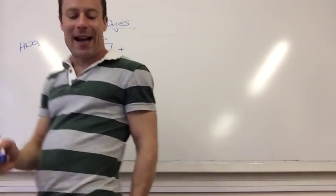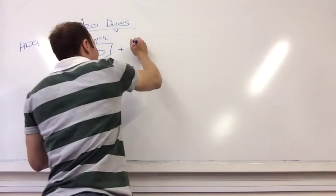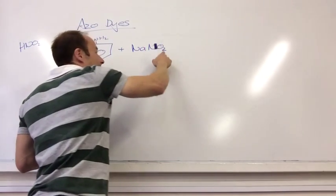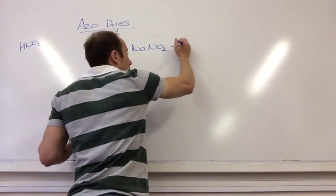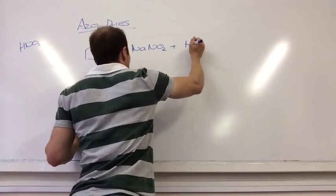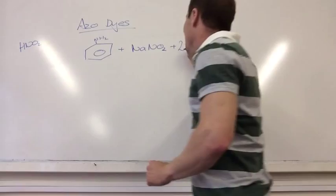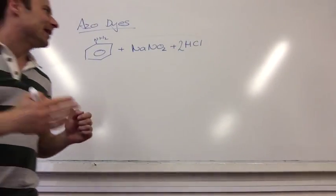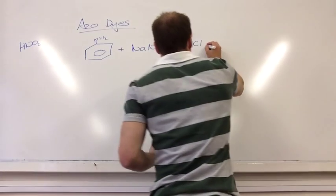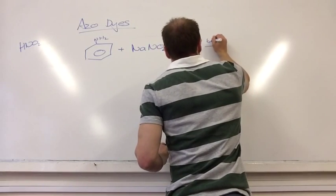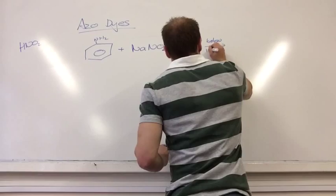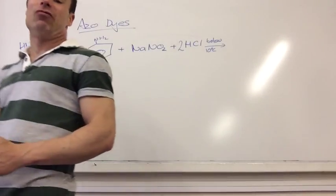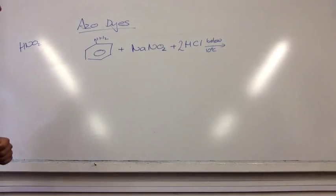So you make it in situ, which means we make it in the reaction and it reacts straight away. So I make it by adding in sodium nitrite, NaNO2, plus HCl. And I need two of those. And it makes this in situ acid. This has to be done below 10 degrees C. Because everything is really unstable.